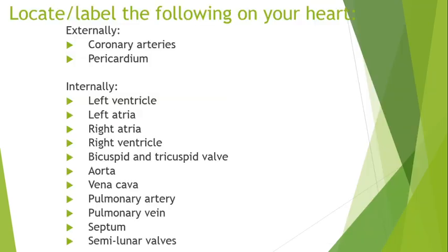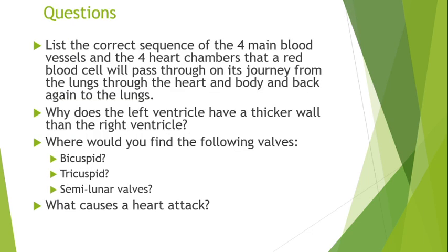Your task is to label everything you can, whether you're using an actual heart or a diagram. Externally, label the coronary arteries and the pericardium. Internally, label the different chambers — ventricles and atria — all valves (bicuspid, tricuspid, semilunar), the four main blood vessels (aorta, vena cava, pulmonary artery, pulmonary vein), and the septum. If you can do all of that, you'll be ready for next week's lessons on how this process actually works, including nervous control.